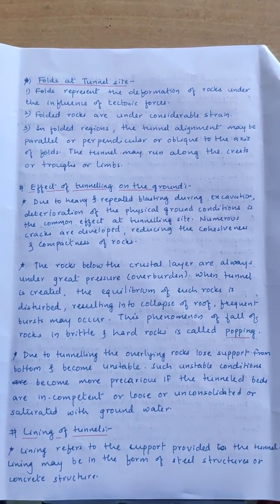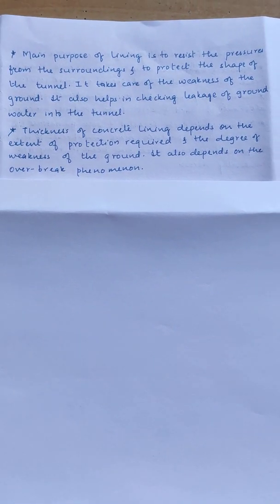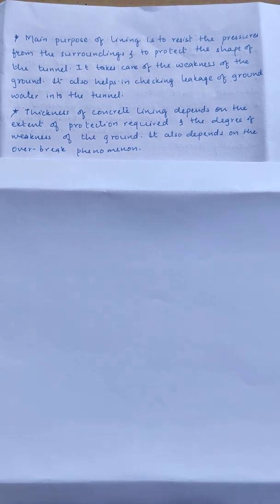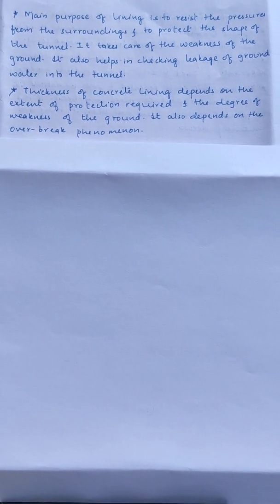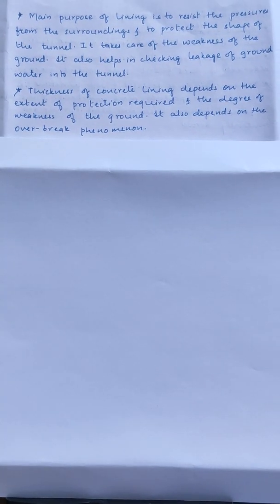Moving to lining of tunnels — lining refers to the support provided to the tunnel and may be in the form of steel or concrete structures. The main purpose of lining is to resist pressure from the surroundings and to protect the shape of the tunnel. It takes care of the weaknesses of the ground and helps in checking leakage of groundwater into the tunnel. The thickness of concrete lining depends on the extent of protection required and the degree of weakness of the ground — the greater the protection needed or the weaker the ground, the thicker the lining. Thickness also depends on the overbreak phenomenon, which will be dealt with in the next session.